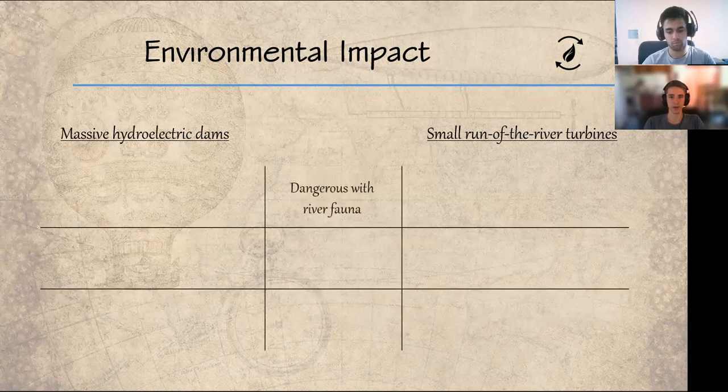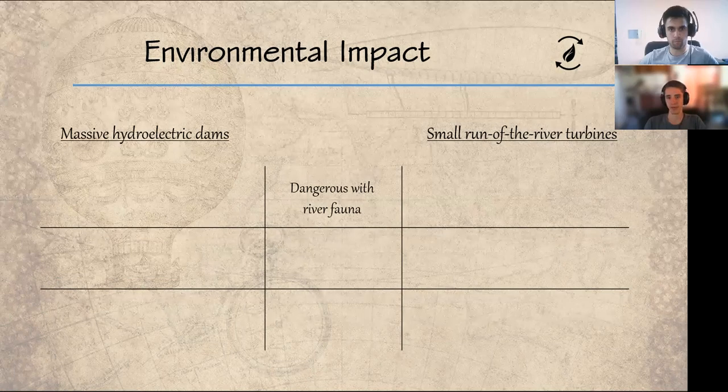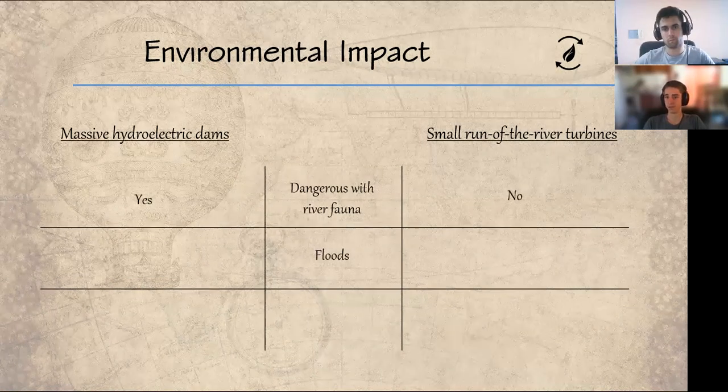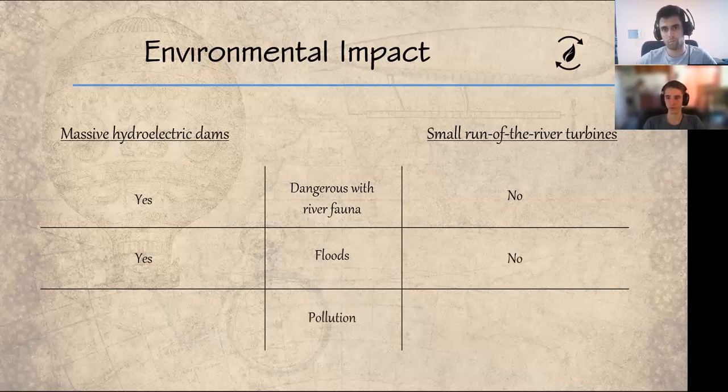First, we have the danger for the fauna, because depending on the shape of the turbines, they can harm the fish. Then we have the floods. These are caused by the change generated by the dams in the river levels. And finally, pollution from emissions from electric generators favors global warming.